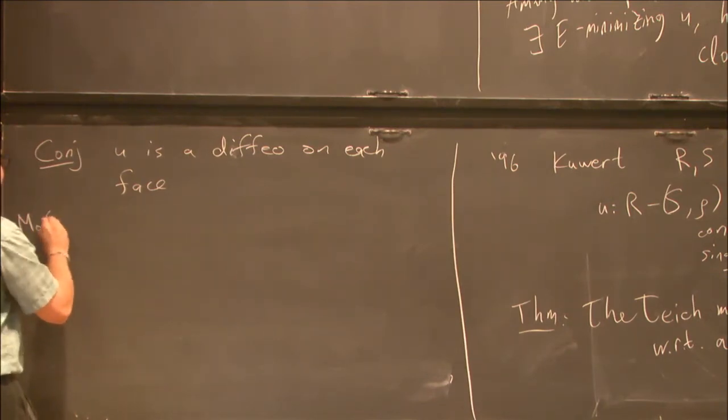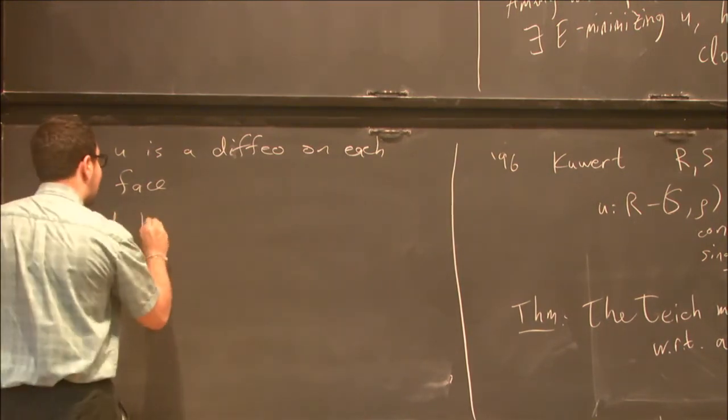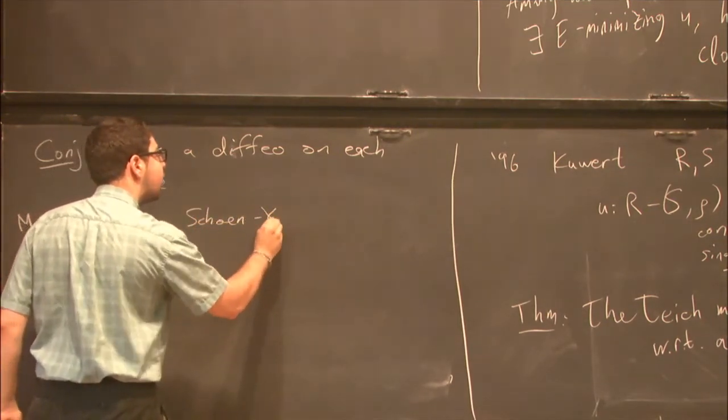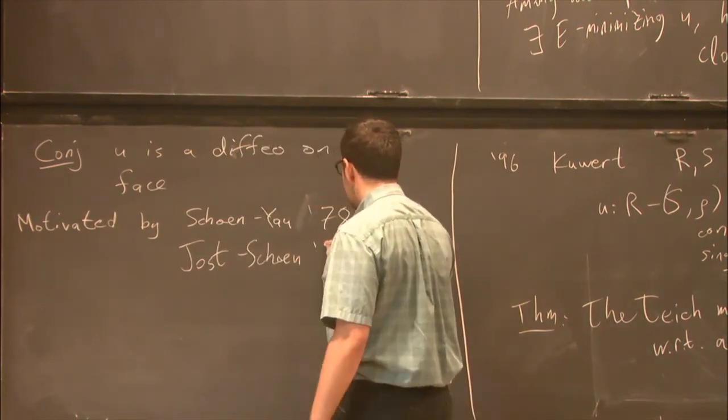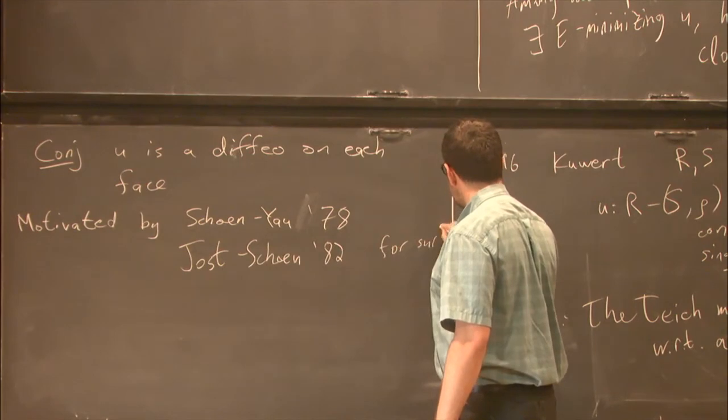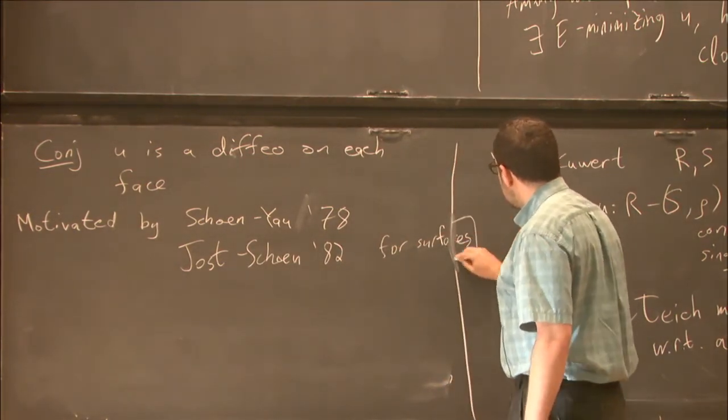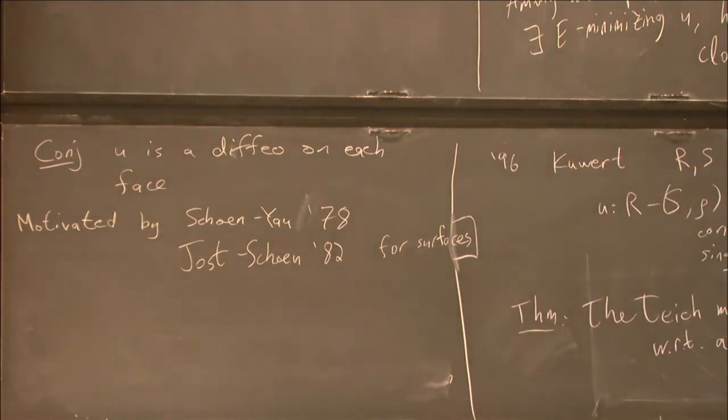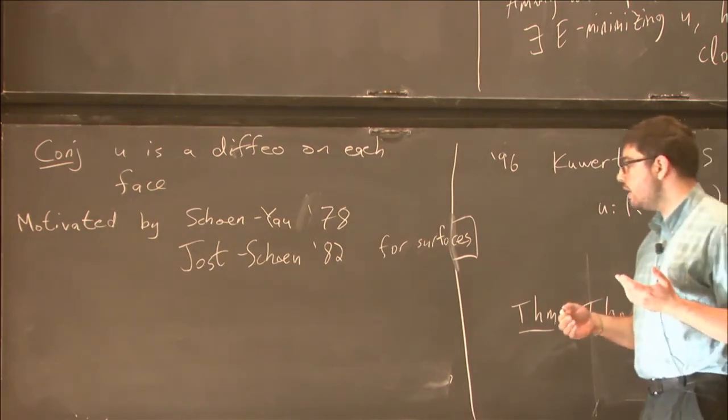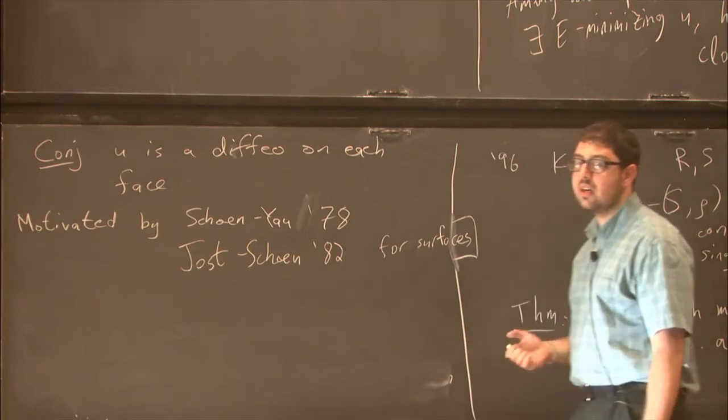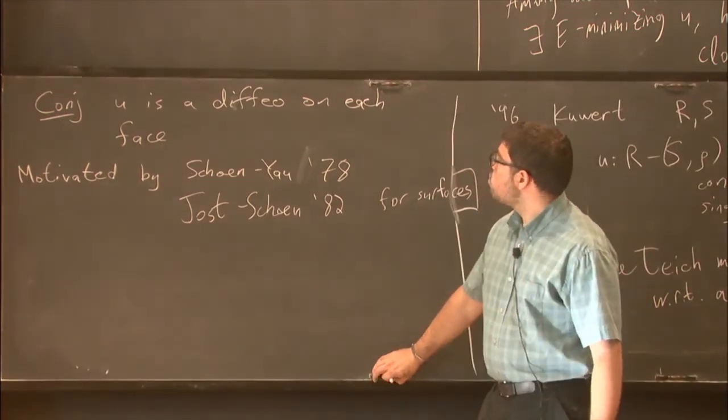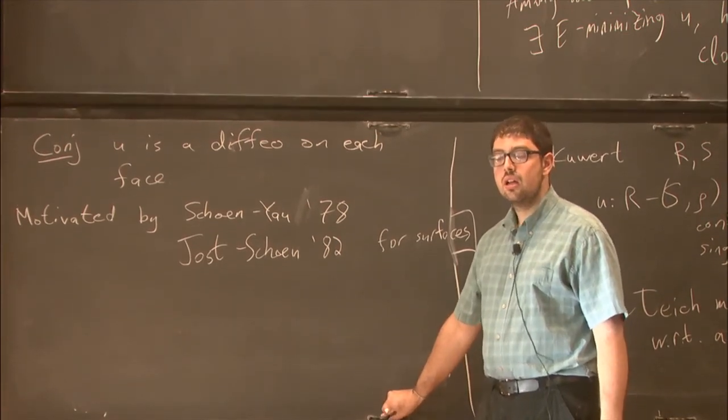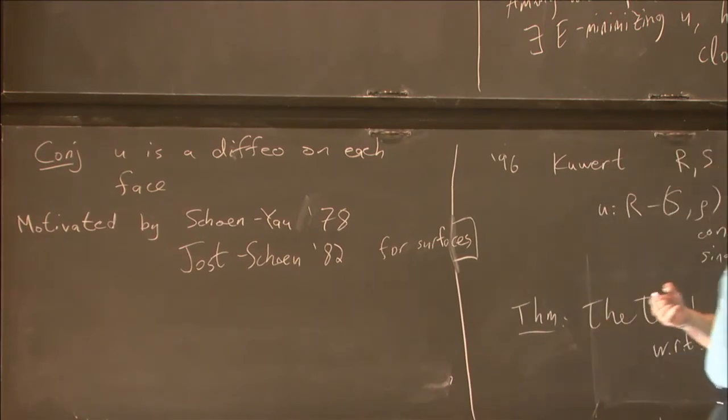So this is motivated, so this conjecture is motivated, in the classical sense, by, let's see, Shane Yao in 78, and Yost-Shane in 82 for surfaces. They prove that every diffeomorphism is isotopic to a harmonic diffeomorphism, or equivalently any degree one harmonic map is a diffeomorphism, when the domain and target are surfaces of the same genus, at least two. In fact, even smaller genus.